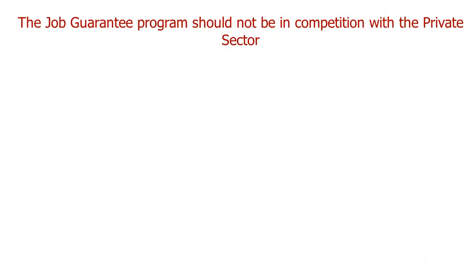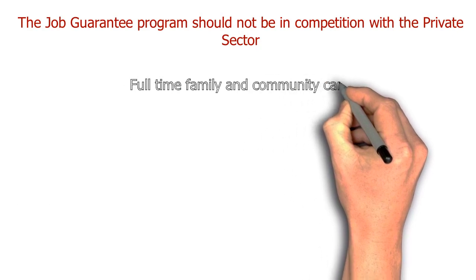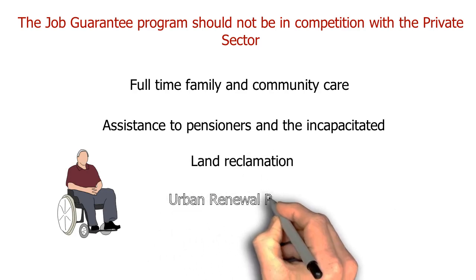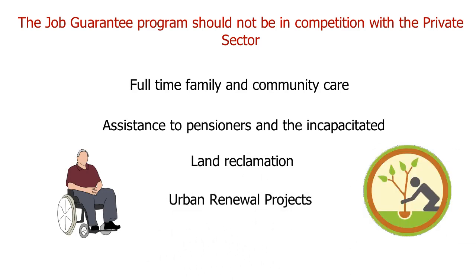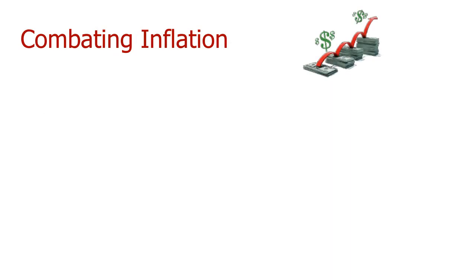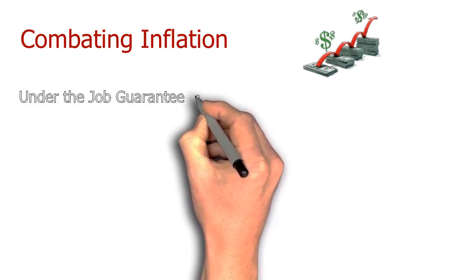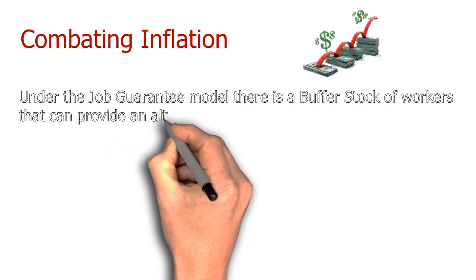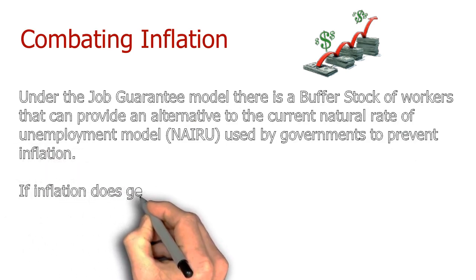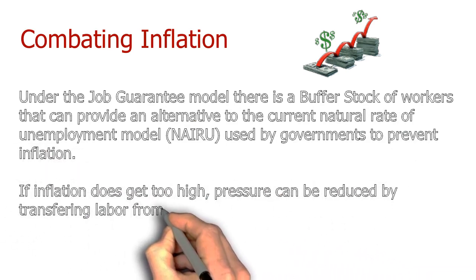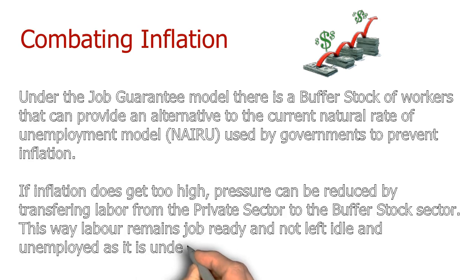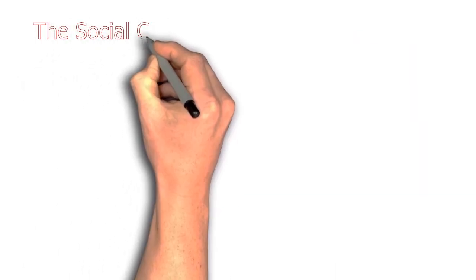Job guarantee jobs should not compete with positions in the private sector but might include such things as full-time family and community care, assistance to pensioners and the incapacitated, and various environmental schemes such as land reclamation and urban renewal projects. Under the job guarantee model there is a buffer stock of workers that can provide an alternative to the current natural rate of unemployment, known as NAIRU, used by governments to prevent inflation. If inflation does get too high, pressure can be reduced by transferring labour from the private sector to the buffer stock. This way labour remains job ready and not left idle and unemployed as it is under the NAIRU model.